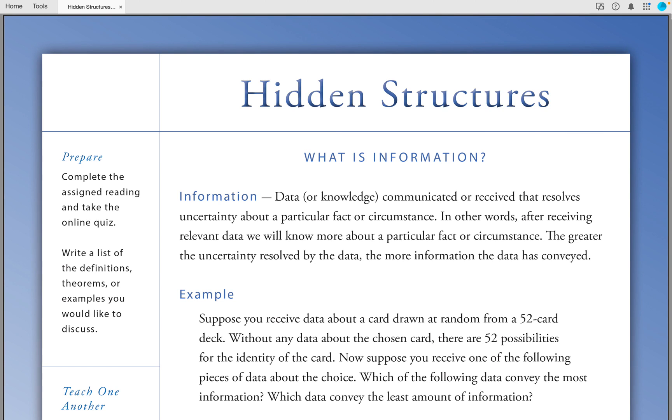What is information? Information is data or knowledge, communicated or received, that resolves uncertainty about a particular fact or circumstance. In other words, after receiving relevant data, we will know more about a particular fact or circumstance. The greater the uncertainty resolved by the data, the more information the data has conveyed.